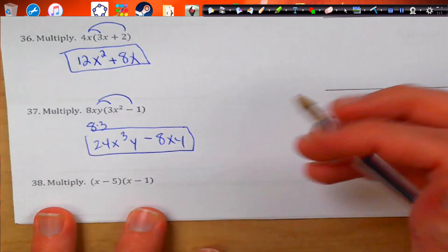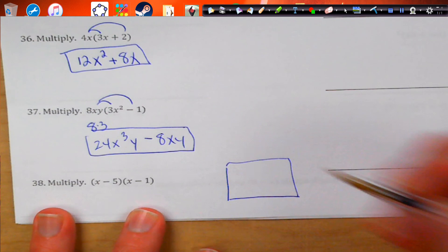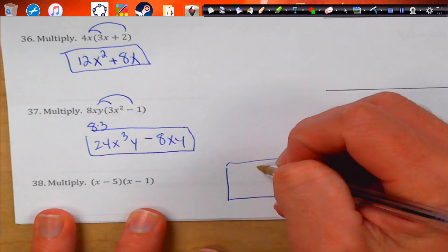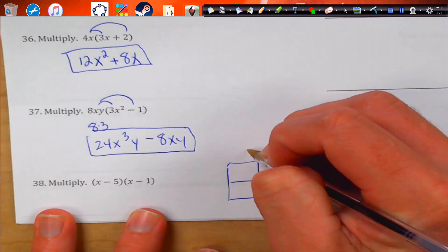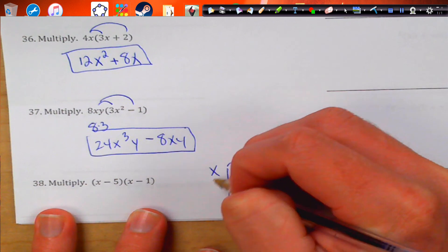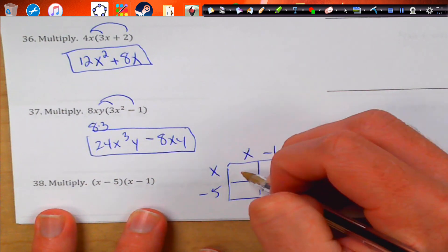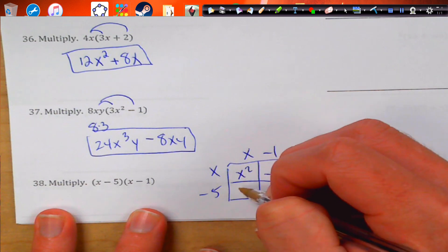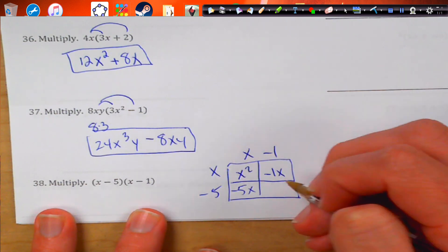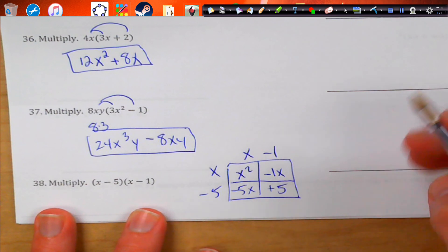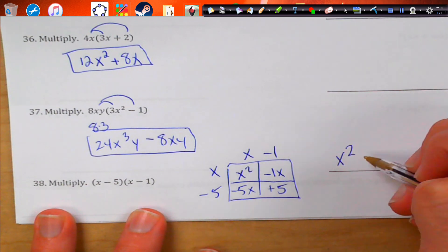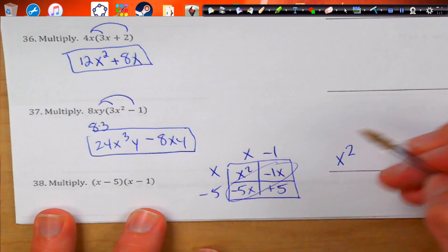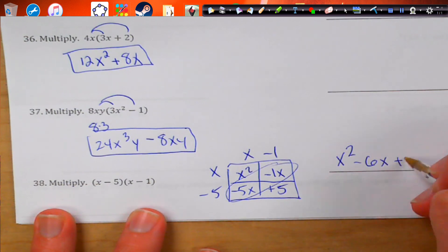Here I like to use the box method. We have x minus 1 and x minus 5. 2x times x is x squared. x times 1 is negative 1x. x times negative 5 is negative 5x. And negative 1 times negative 5 is positive 5. When we combine our like terms, we get x squared. These guys add to make negative 6x and then plus 5.